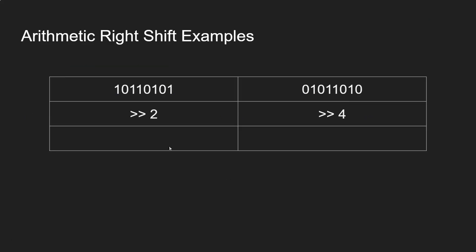Let's have a practice. We've got a negative binary number — it starts with a one in two's complement form — and a positive binary number starting with a zero. In the first example, the most significant bit of one gets shifted along and also copied in again, shifted over two times. In the second example, shifted four places, the most significant bit was zero, so zeros keep getting passed along. If it starts with a one, ones keep getting filled in.